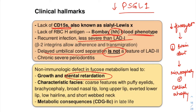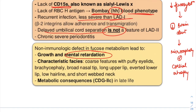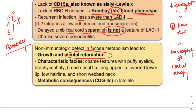The Bombay blood group is a rare blood group phenotype characterized by deficiency of all three — that is deficiency of H antigen, A, and B. All three blood group antigens are absent in the Bombay blood group. LAD2 patients and the Bombay blood group are always seen together because both are associated with a global defect in the pathway of fucose metabolism.